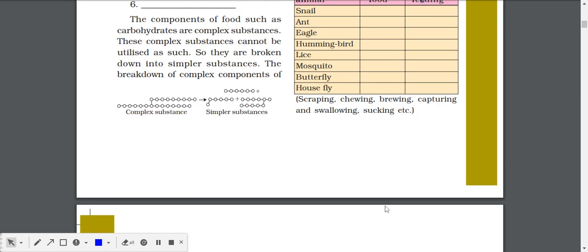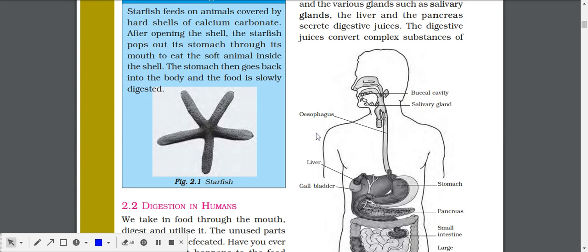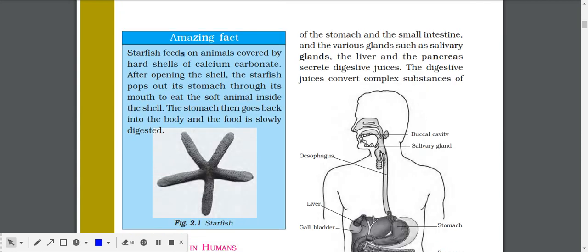Amazing fact: Starfish feeds on animals covered by hard shells or calcium carbonate. How? It's hard, so how can they catch this? After opening the shell, the starfish pops out its stomach through its mouth to eat the soft animal inside the shell. You might have seen snails having a hard coating outside and being quite soft from inside.